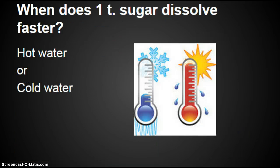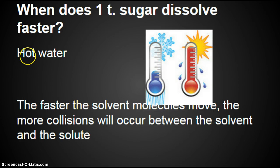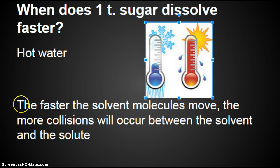Now, we're going to look at temperature. When does one teaspoon of sugar dissolve faster — in hot water or cold water? When you heat something up, the molecules move faster. Hot water dissolves faster because the faster the solvent molecules move, the more collisions will occur between the solvent and the solute, and therefore it's going to dissolve faster. More moving, more collisions, faster dissolving.